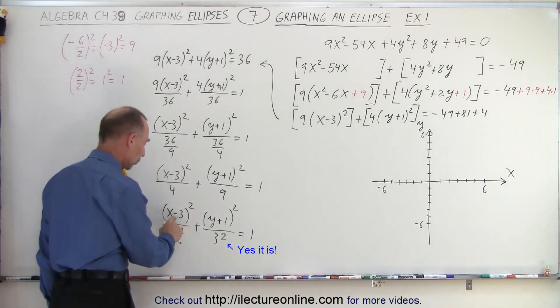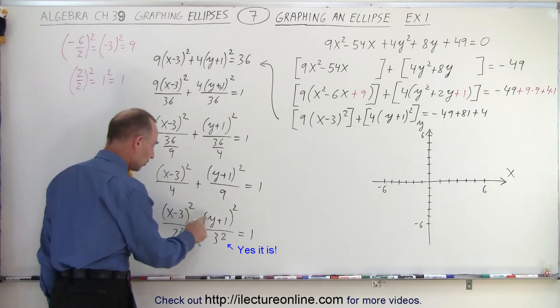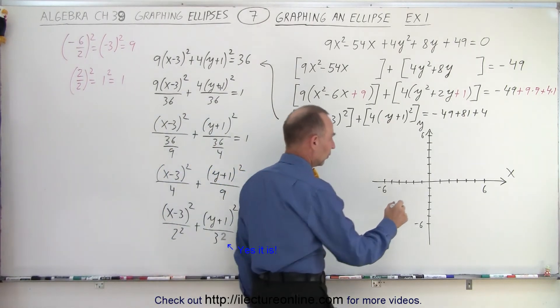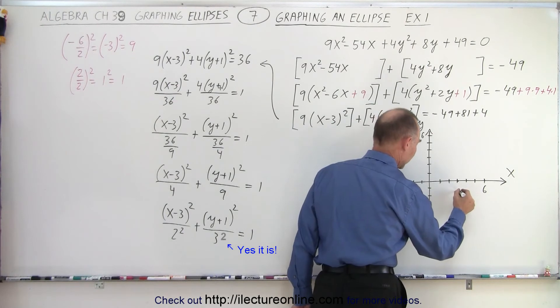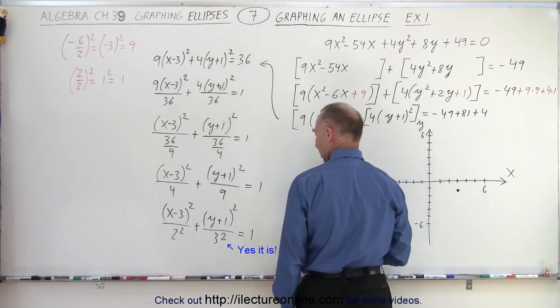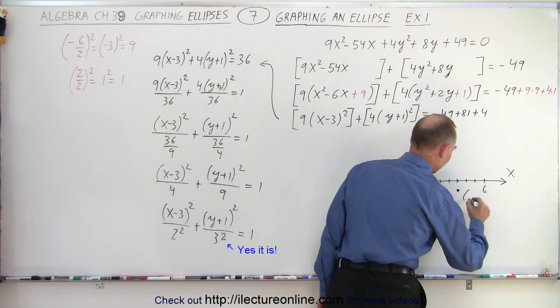Now we're ready to graph this. First of all, the offset from the origin, we go to the right three units and down one unit. So 1, 2, 3, down 1. So this here is the central point of the ellipse at 3, negative 1.